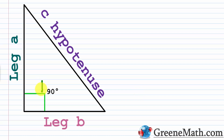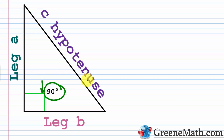If you have a right triangle, you know it's a right triangle because of the 90-degree angle. The Pythagorean formula relates the sides of a right triangle. You have these two shorter sides, called legs, and then the longest side — opposite the 90-degree angle — which is your hypotenuse. It tells us that a squared plus b squared is equal to c squared.